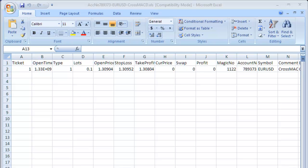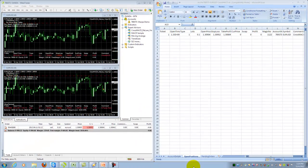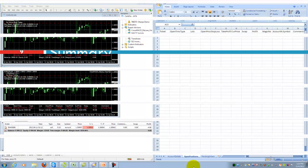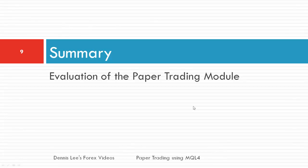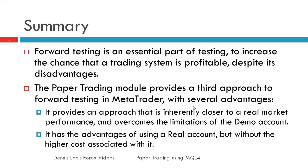For the summary, we will evaluate the paper trading module. Forward testing is an essential part of testing to increase the chance that a trading system is profitable, despite its disadvantages. The paper trading module provides a third approach to forward testing in MetaTrader with several advantages. First, it provides an approach that is inherently closer to real market performance and overcomes the limitations of a demo account. Second, it has the advantages of using a real account but without the higher cost associated with it.